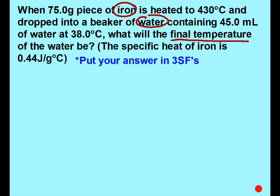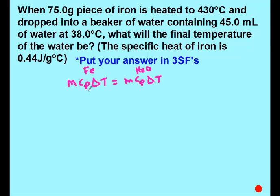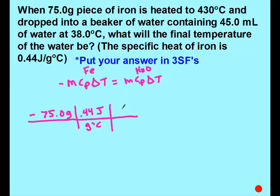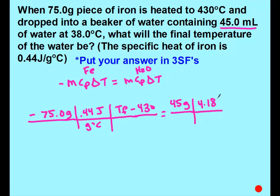On this one, you should have had iron on one side, water on the other. Iron was negative because it's starting at the higher temperature. So negative 75.0 grams of iron times cp of iron times change in temperature, which is final minus initial 430. On the other side, water: 45 milliliters equals 45 grams, specific heat of water was 4.184 J/g·°C, and it's final minus initial 38 degrees.